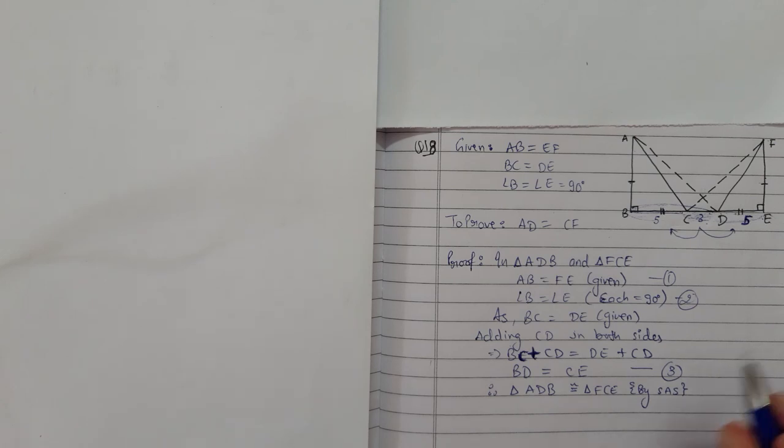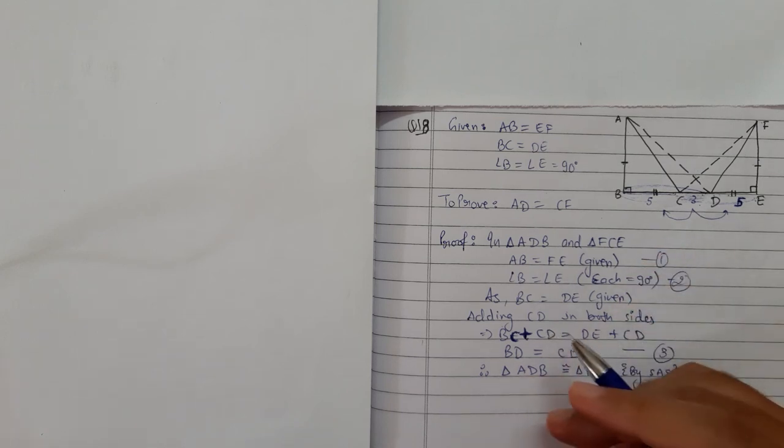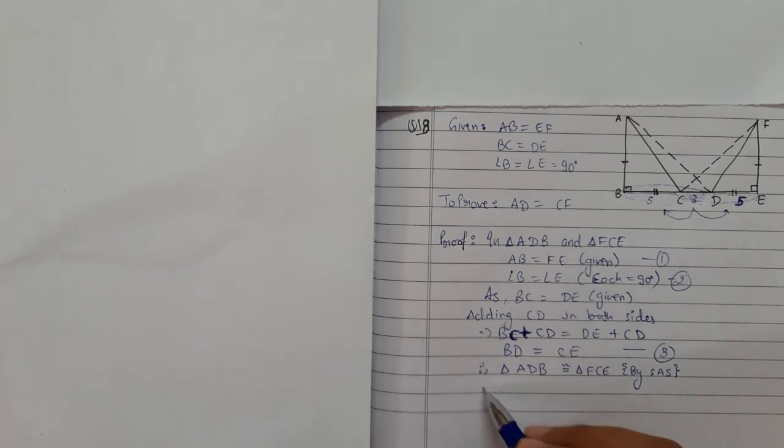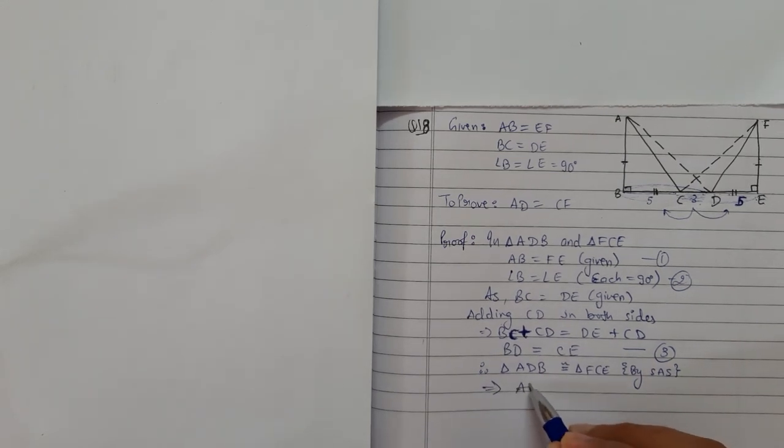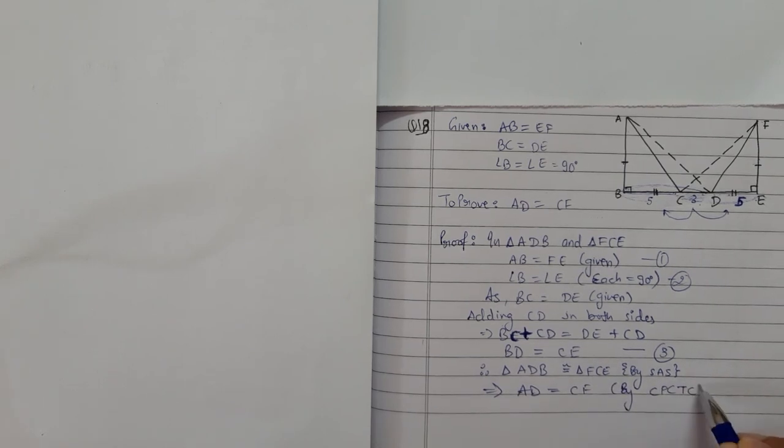As we know, if two triangles are congruent, then the remaining parts are also congruent with the property called CPCTC, congruent parts of congruent triangles. Therefore, AD equals CF by CPCTC. Hence proved. See you in the next video. Thank you for watching.